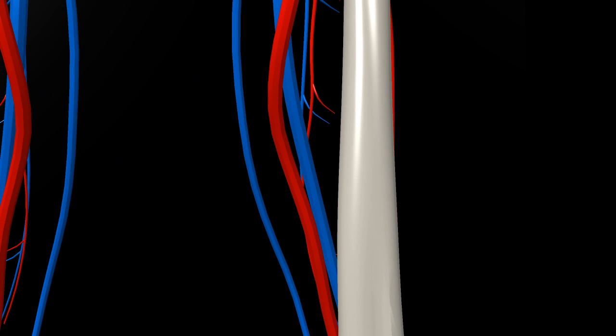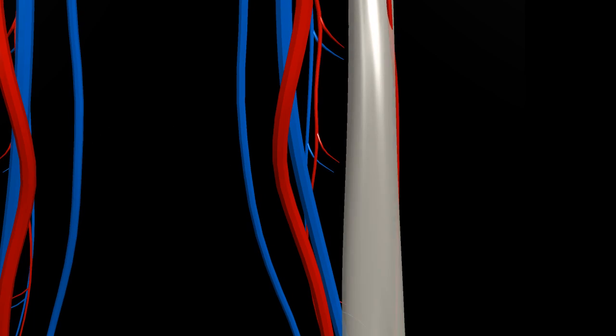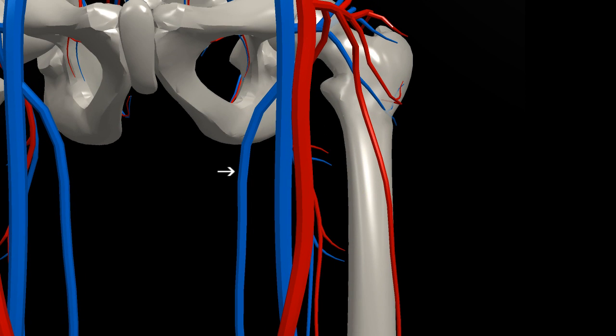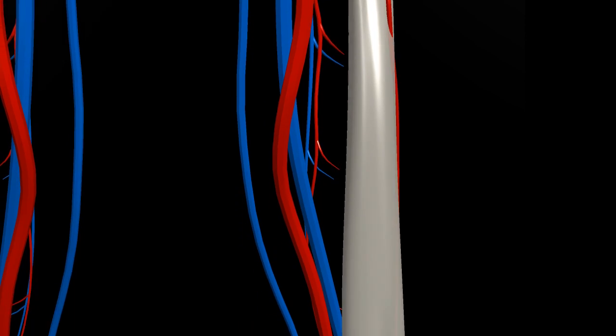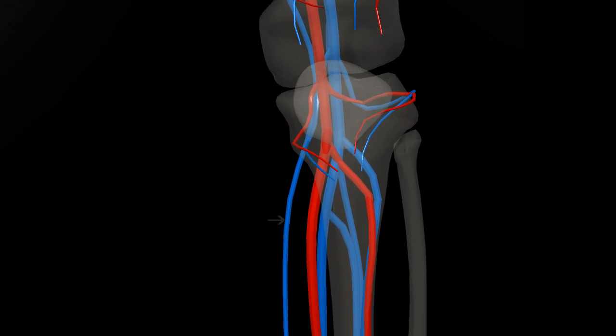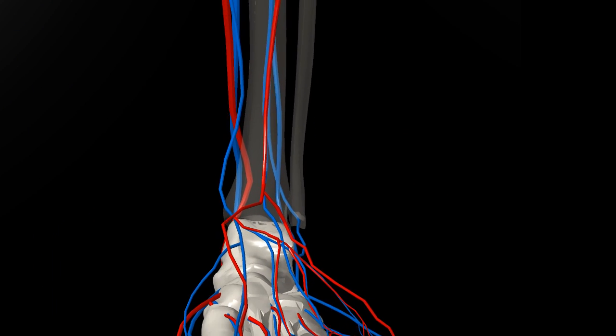This particular vessel is called the greater saphenous vein, and runs from the inner thigh, down past the knee, and joins back up with the deep system at the inner ankle.